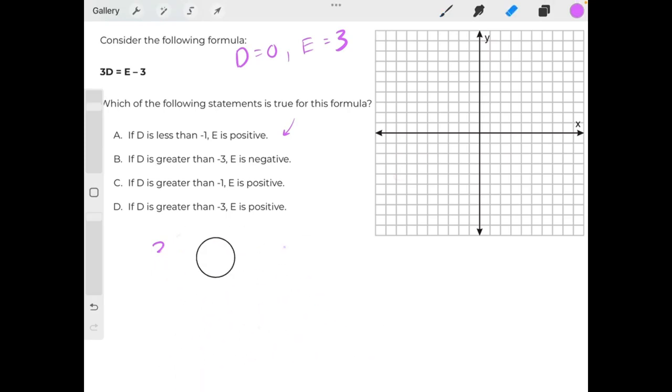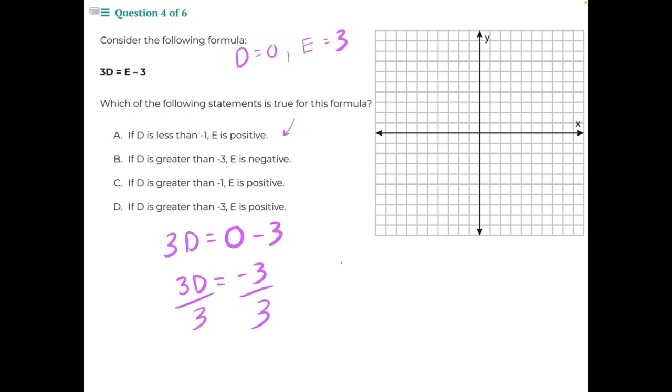Now we do the same process for the other variable. We're going to substitute 0 in for e and solve for d. 3d equals, instead of e, we put 0 minus 3. 0 minus 3 would just be negative 3. 3 is being multiplied to d, so if we want to isolate d, we need to do opposite operations to both sides of the equations. 3 divided by 3 will just give us 1, leaving us with d equals negative 3 divided by 3 is negative 1. So when e equals 0, d is negative 1.